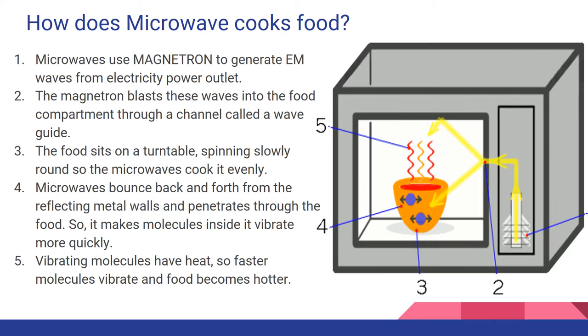As we saw, microwaves use magnetron to generate EM waves, basically microwaves. These microwaves, these EM waves come to the food chamber through something called a wave guide. The food sits on a turntable spinning slowly so that the food is cooked evenly.